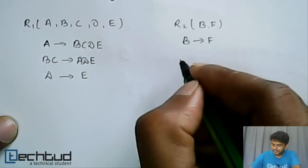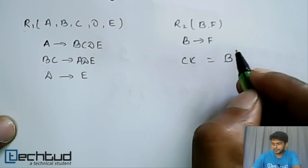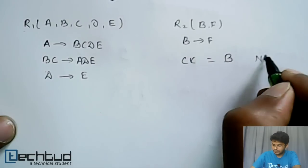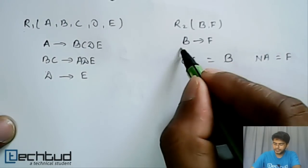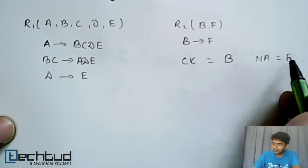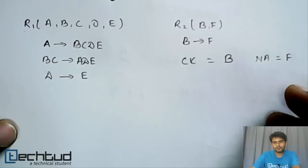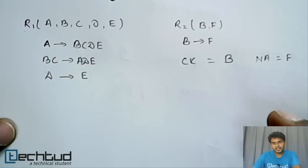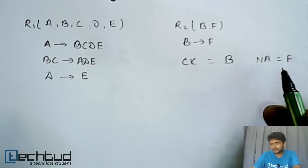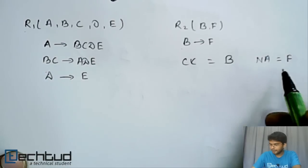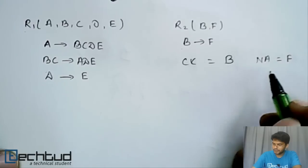For R2, the candidate key is B. B can determine F, and the non-prime attribute is F, which is fully functionally dependent on B — so it is in second normal form. Since there is only one non-prime attribute, there is no possibility of a dependency among non-prime attributes. Therefore, R2 is in third normal form.